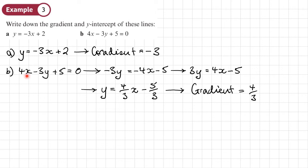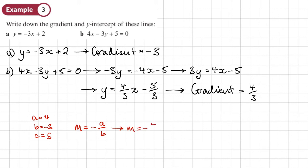If we had used the memorised formula, with a equals 4, b equals negative 3, m equals negative a over b, that gives negative 4 over negative 3 which is four thirds — the same answer. But rearranging doesn't take long and is more reliable.